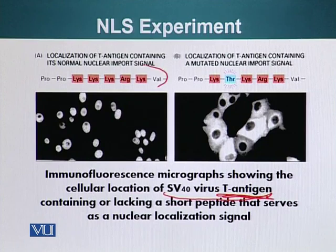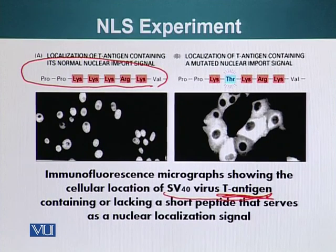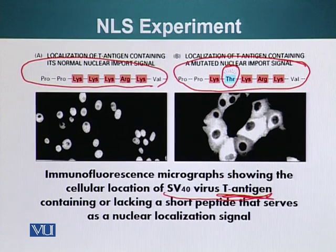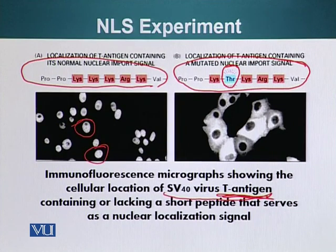This is the normal version of this antigen — it contains the nuclear import signal. Here is a mutated version of this protein in which one of the lysines has been changed to threonine. You can see that when we had the normal T antigen, it accumulated in the nuclei of the cells because it had the NLS in its normal form.